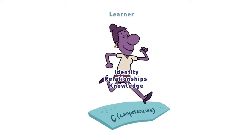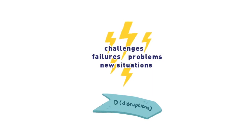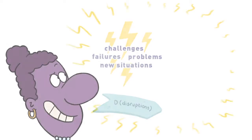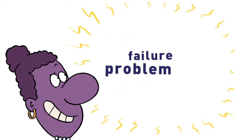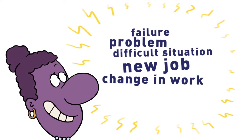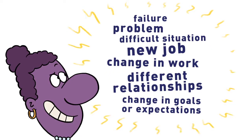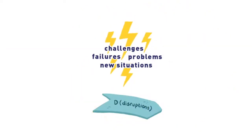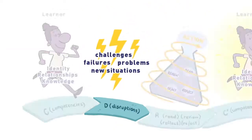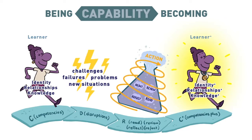The capability approach to learning engages a learner's identity and sense of self. A person's relationships to other people and their place in the world comes before their knowledge and skills. Learning is triggered when a person is disrupted by a challenge. A challenge can be a failure, a problem, a difficult situation, or a new job. It can be a change in work, a different relationship, or a change in goals or expectations. Whether the challenge is a negative or positive disruption, it causes a disturbance that usually brings out a learning need.